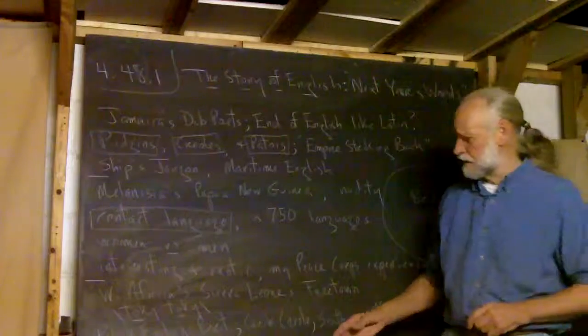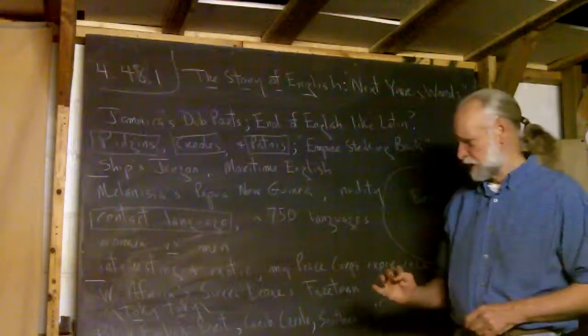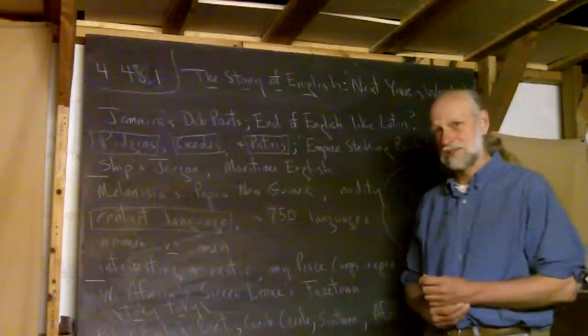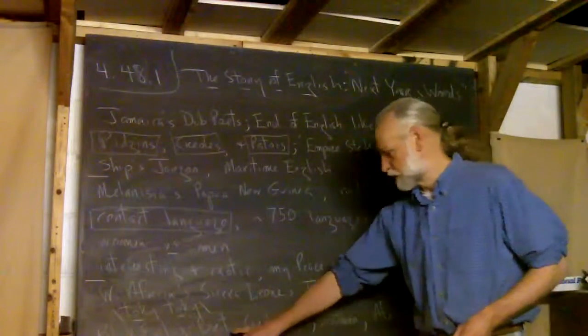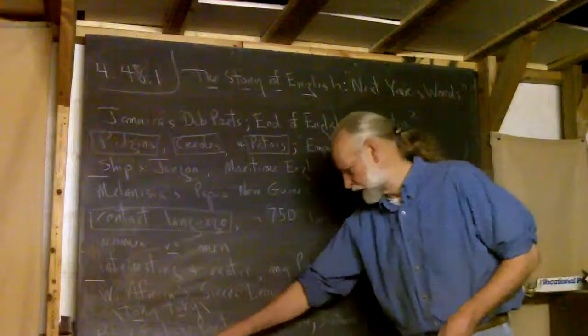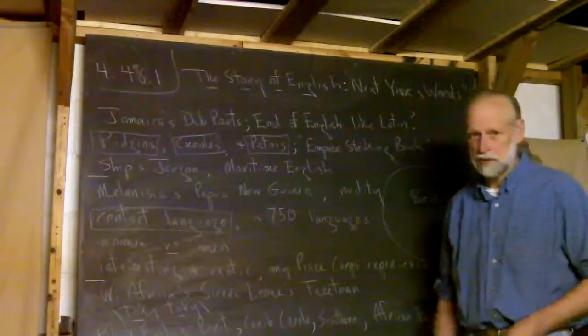He breaks down Black English into four kinds that are developing. Remember, this was 1986, and I'm sure developments have gone on. But there's British Black English, Caribbean Black English, or Caribbean Creole, he calls it.